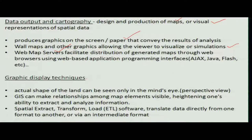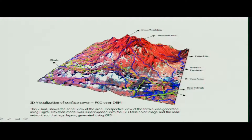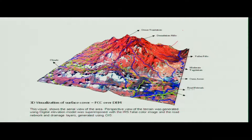Another graphic display technique is the perspective view. This is different from a normal map in that you can see where it is high and where it is low — it looks like hills and valleys. This is generated using the digital elevation model, which gives a three-dimensional approach to the layers. On a plane map you can only read hills and valleys, but perspective creates a better perception for people.